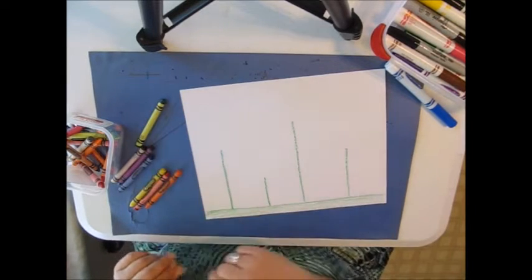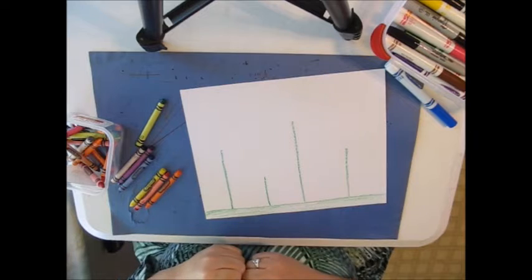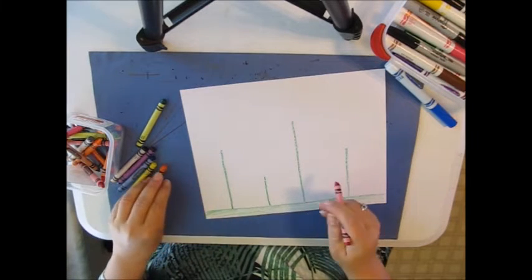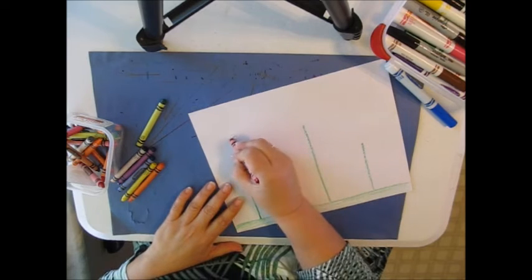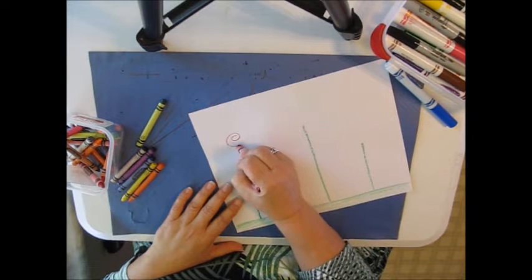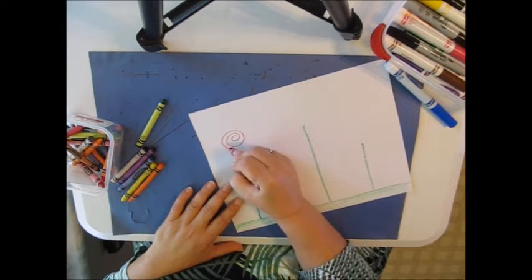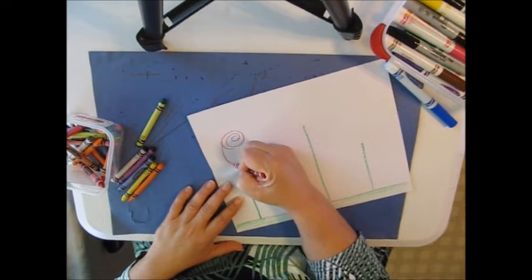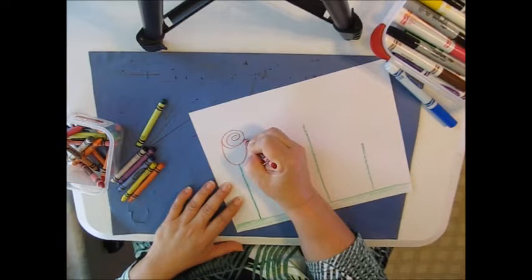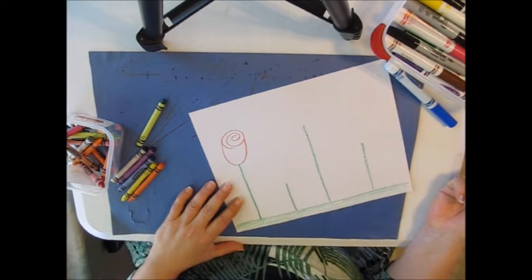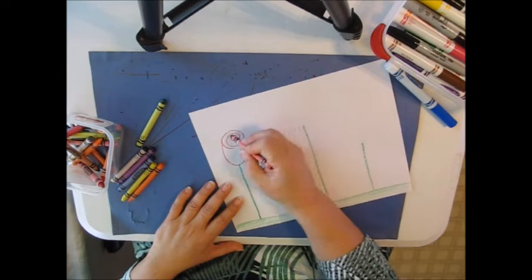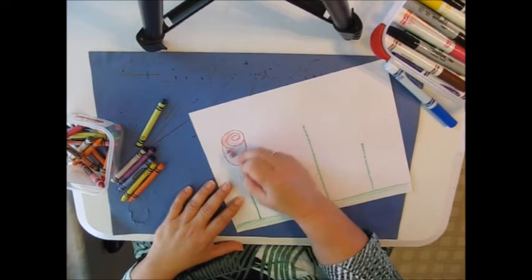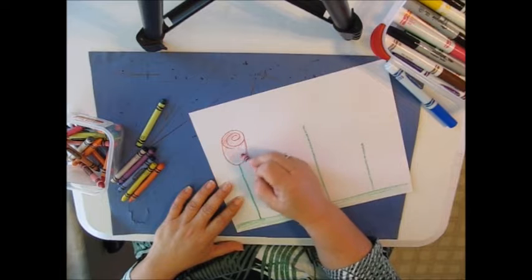So first of all, I'm going to show you how to draw a rose. A rose has a very tight inside, so I drew a spiral. Then what I'm going to do is make a great big U around it. That's my rosebud. So I would color that in. And that is my rose.